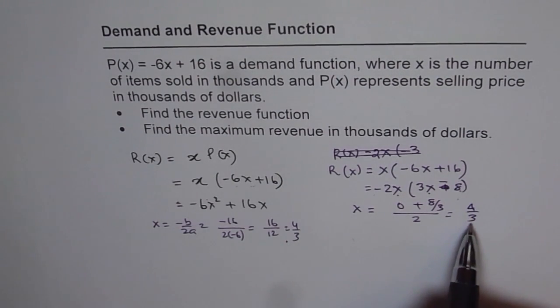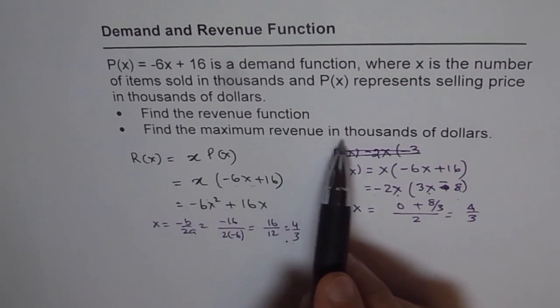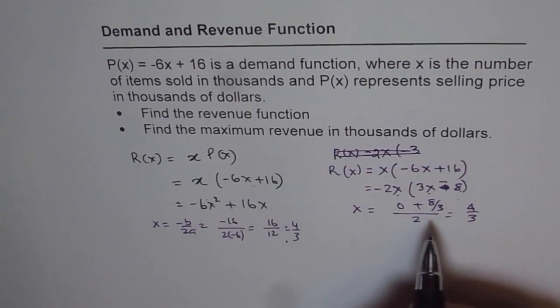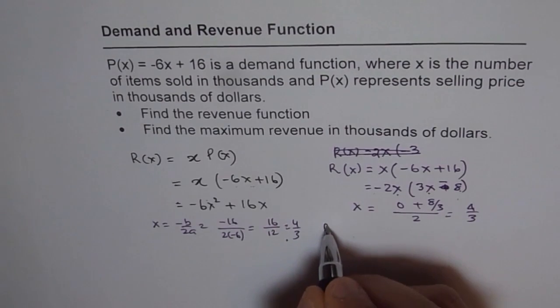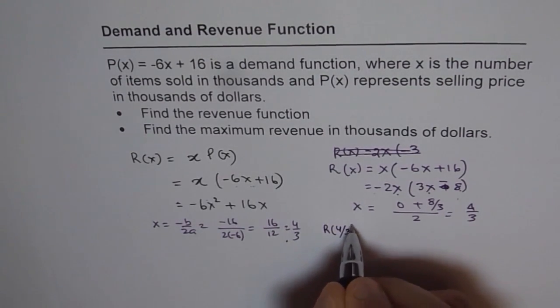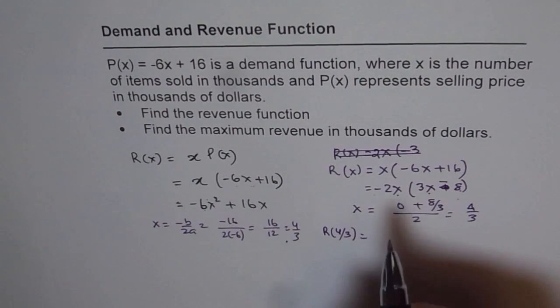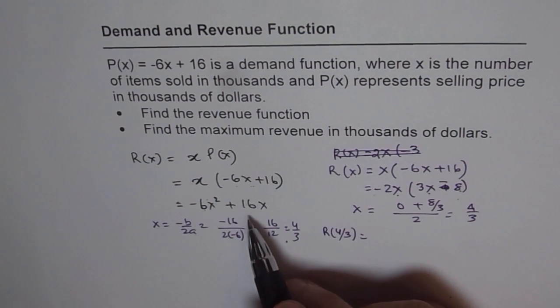So for x = 4/3, you get the maximum revenue. To find the maximum revenue in thousands of dollars, replace x with 4/3. When you replace it in this equation, you can calculate the maximum revenue.